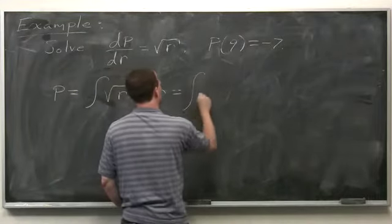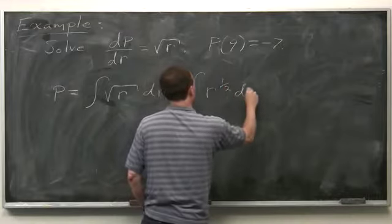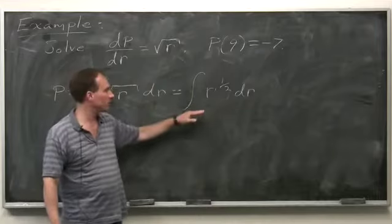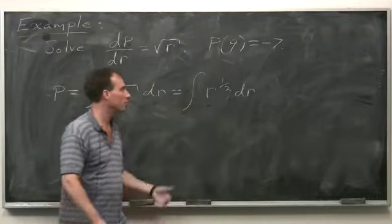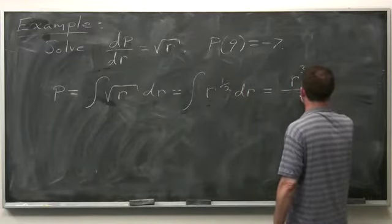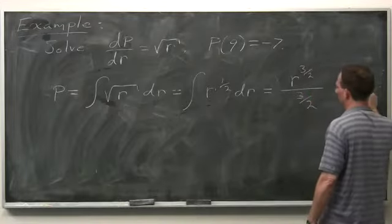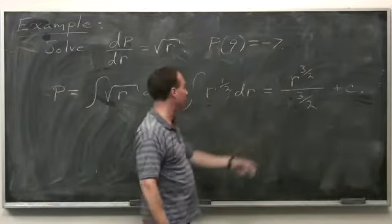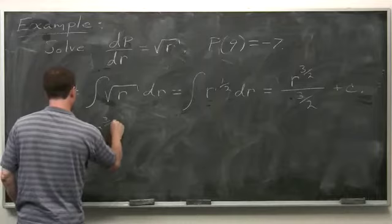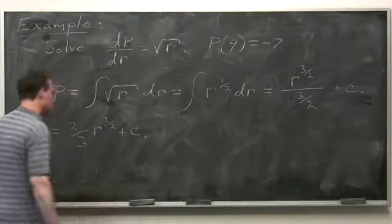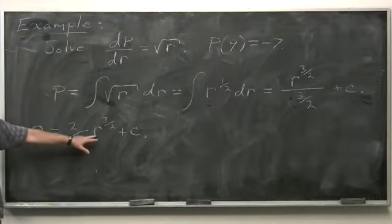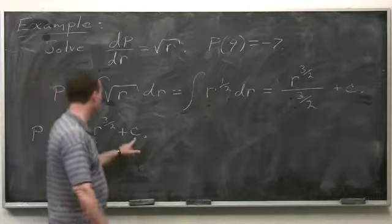The general anti-derivative of r to the one-half: you add one to the exponent to get r to the three-halves, and divide by the new exponent three-halves, plus c. Inverting and multiplying, we get p equals two-thirds r to the three-halves plus c. This is the general solution to the differential equation.